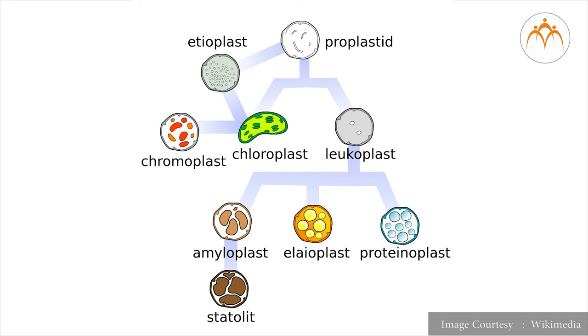Some other types of plastid are chromoplasts. The chromoplasts include fat-soluble carotenoid pigments like xanthophylls, carotene, etc., which provide the plants with their characteristic color: yellow, orange, red, etc.